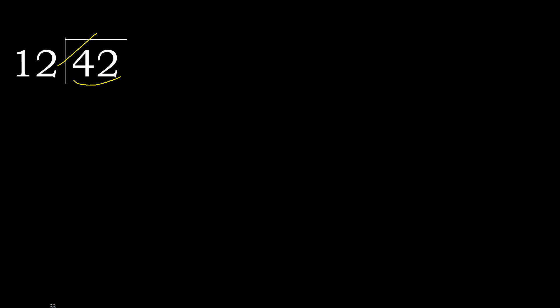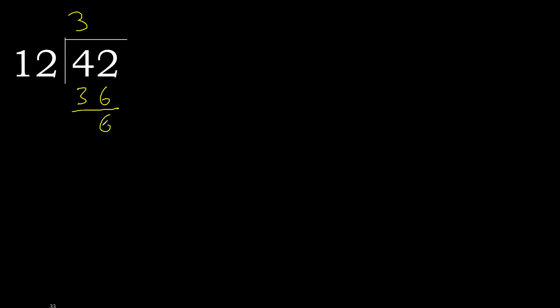12 multiplied by 4 is 48 — 48 is greater, so we try 12 multiplied by 3, which is 36. 36 is not greater, so we subtract: 42 minus 36 gives a remainder of 6.